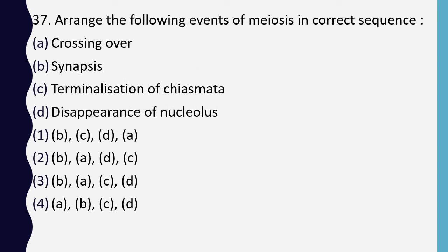Question 37. Arrange the following events of meiosis in correct sequence: crossing over, synapsis, terminalization of chiasmata, disappearance of nucleolus. The correct sequence is: first synapsis occurs, then crossing over, followed by terminalization of chiasmata, and finally disappearance of nucleolus.